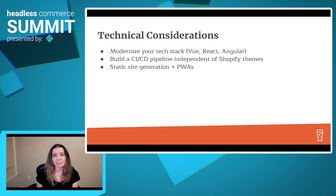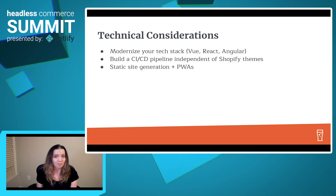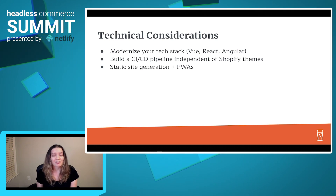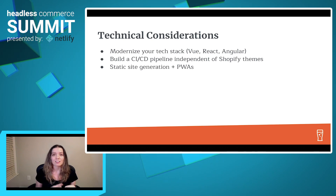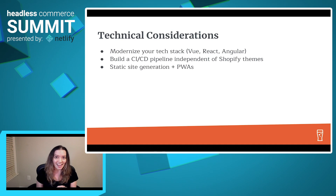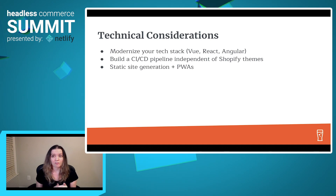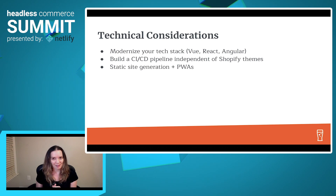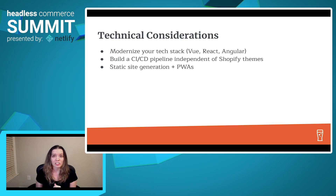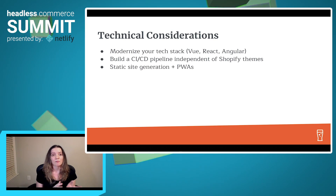Here are some technical considerations. First, you can modernize your tech stack. On the storefront, you're most likely used to building themes with HTML, CSS, JavaScript, Liquid, and probably jQuery. You can finally introduce the Jamstack into your regular tech stack, or use any modern library or framework such as Vue, React, or Angular. Next, you can build a CI/CD pipeline. If you've built a theme on Shopify, you know how difficult it is to do any form of continuous integration or continuous delivery. By decoupling the frontend from Shopify, you can finally make your CI/CD dreams come true.